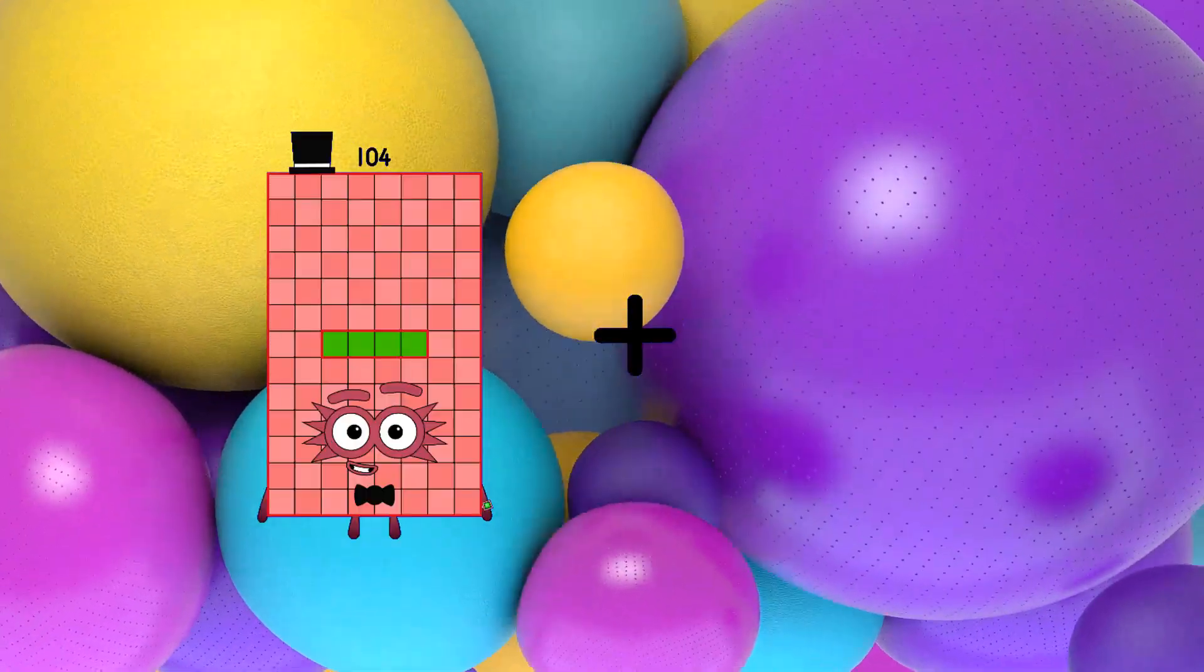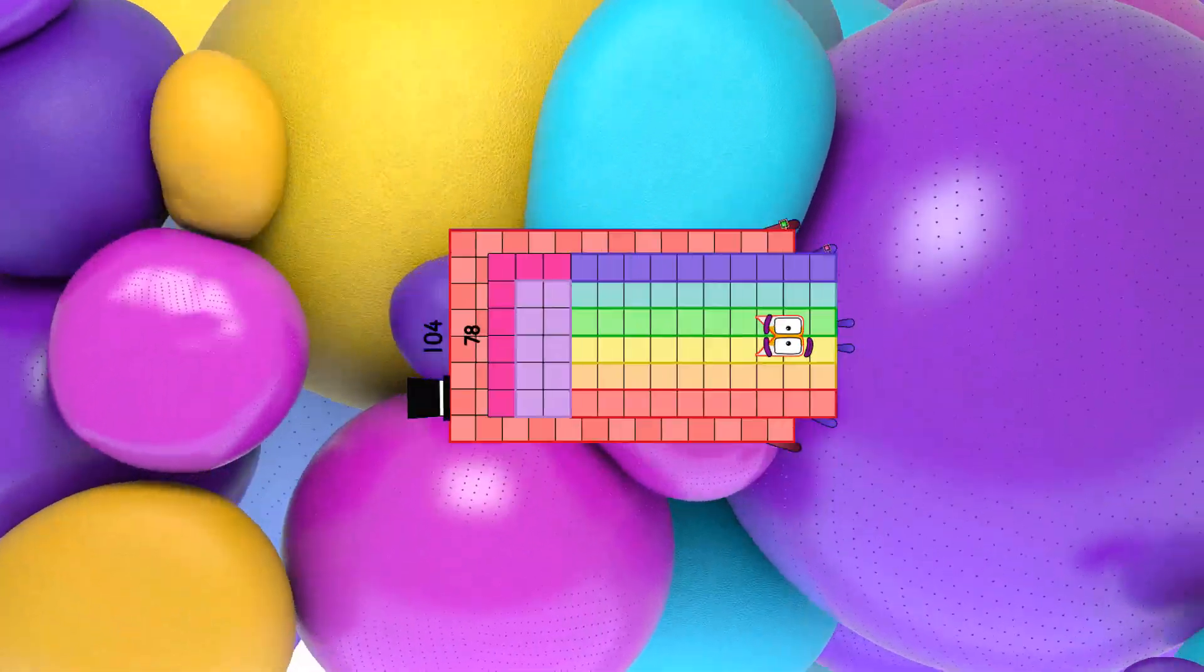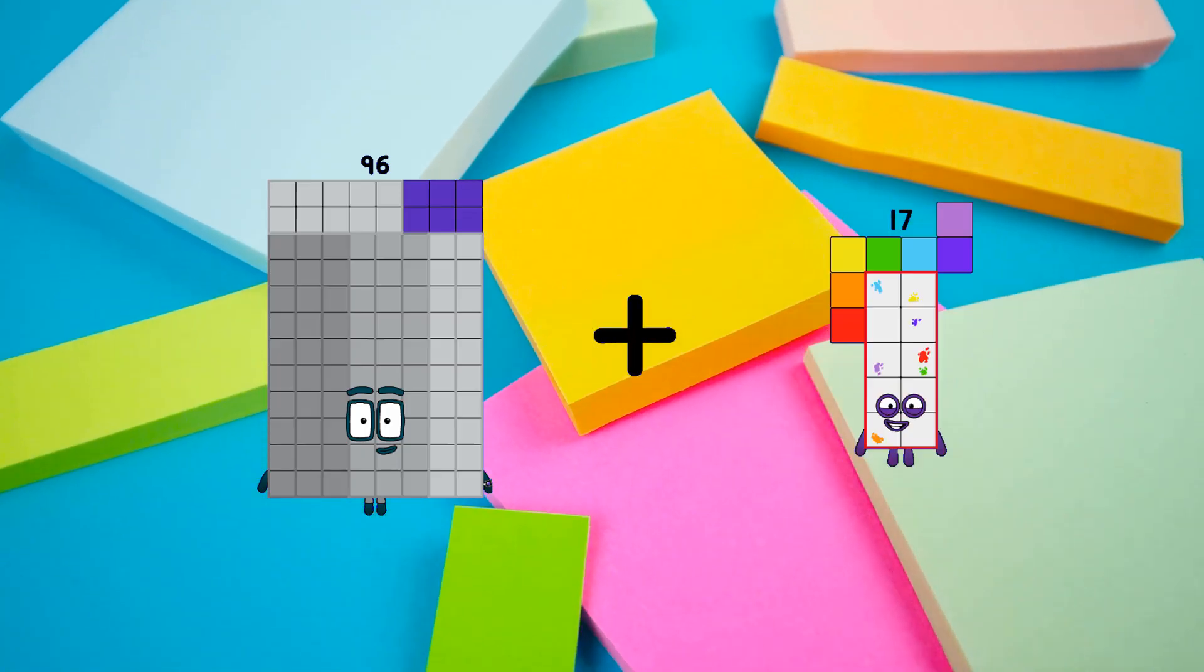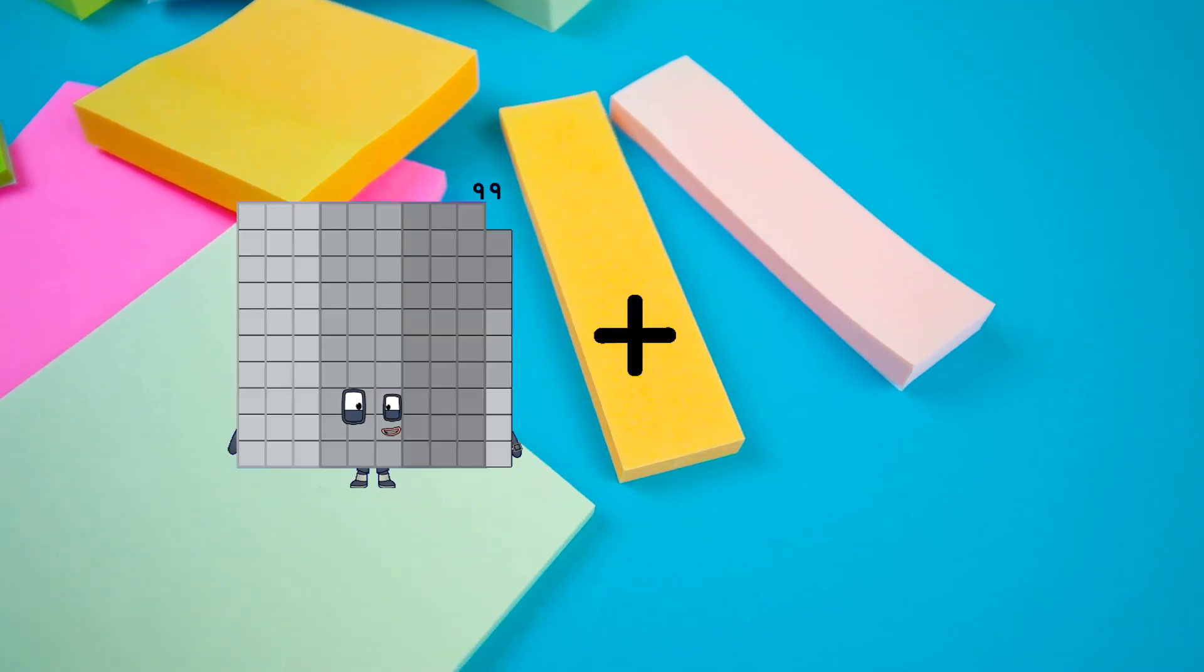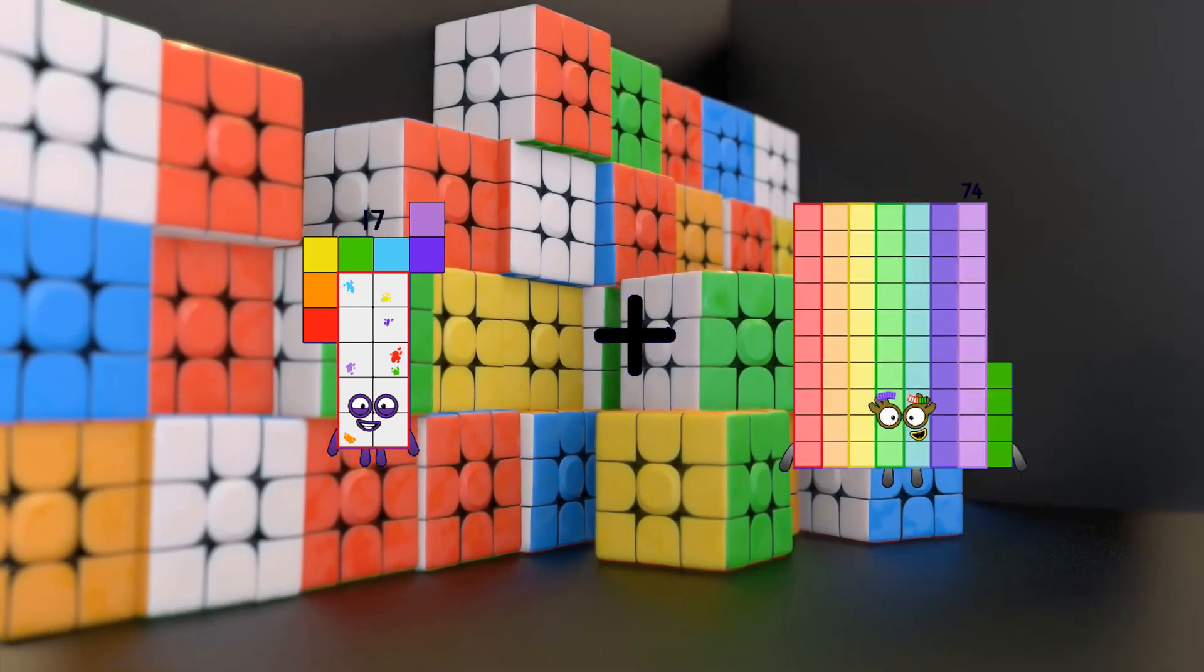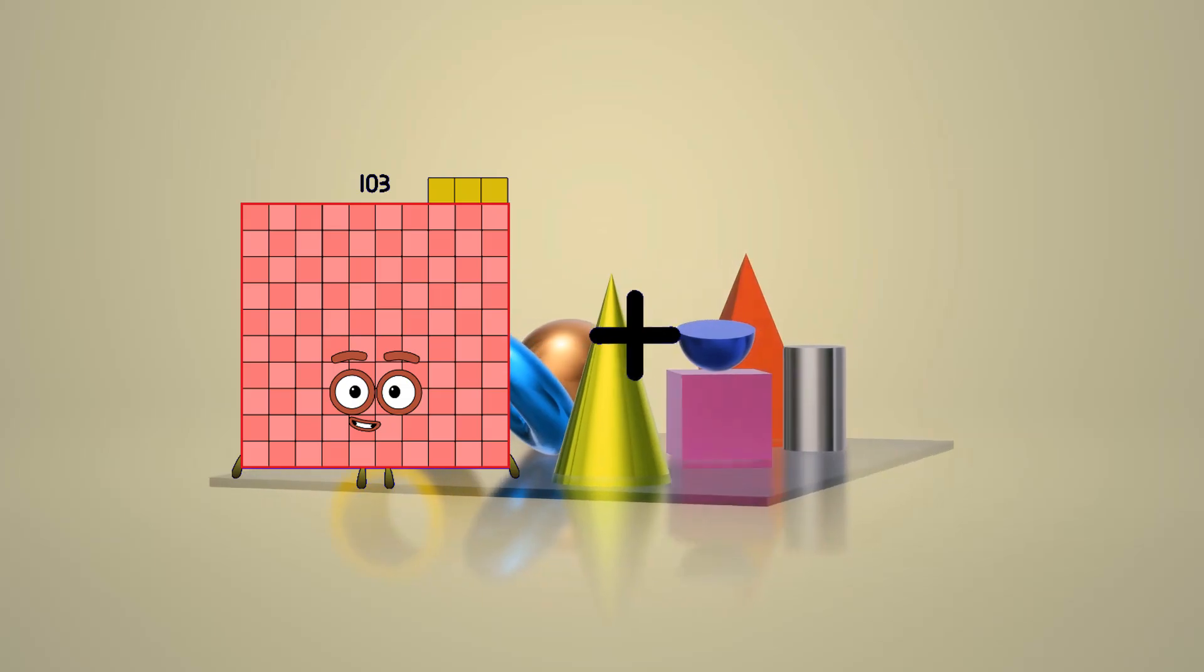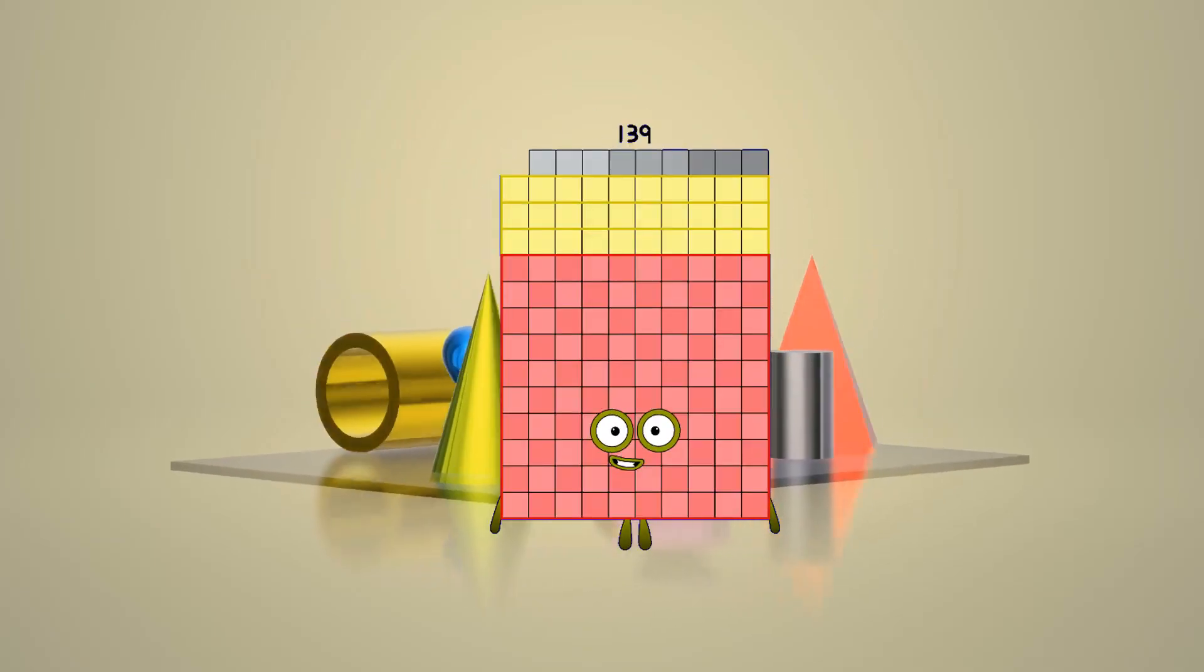104 plus 78 equals 182. 96 plus 70 equals 166. 17 plus 27 equals 44. 103 plus 36 equals 139.